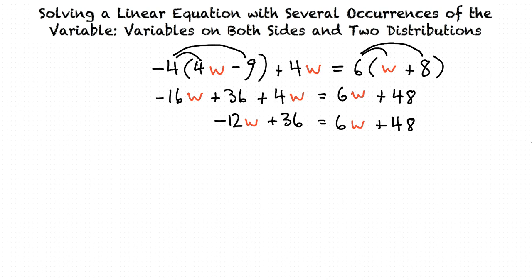Let's put all the terms with w on the left and all the constant terms to the right by subtracting 6w on both sides and subtracting 36 from both sides.